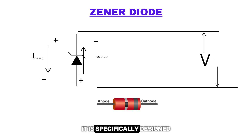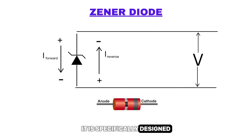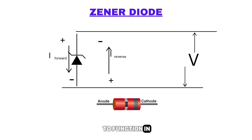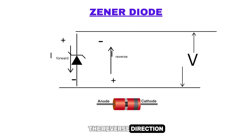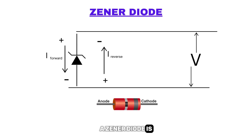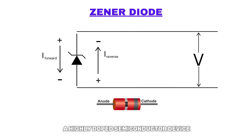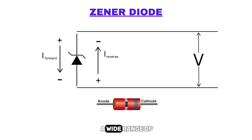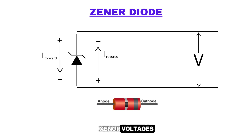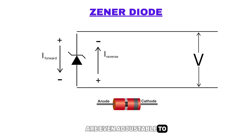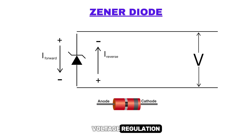It is specifically designed to function in the reverse direction. A Zener diode is a highly doped semiconductor device. It is engineered with a wide range of Zener voltages, VZ, and certain types are even adjustable to achieve variable voltage regulation.